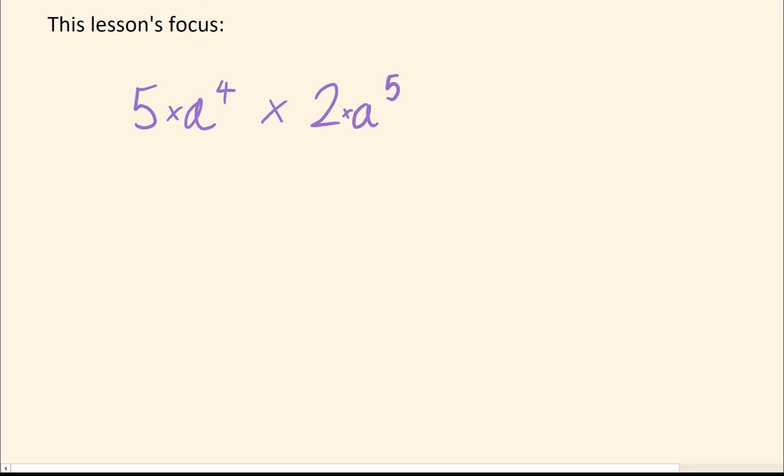We can recall this basically meant 5 times a to the 4 times 2 times a to the 5. And last time, to get the final answer, we had all our numbers at the front, and all our letters at the end. So we're going to do the same thing here.